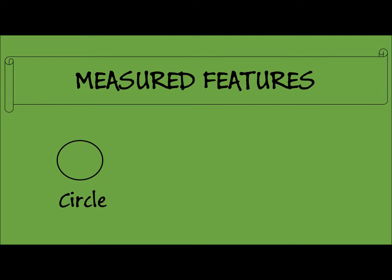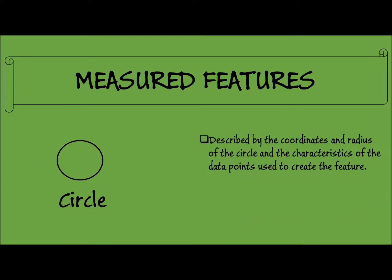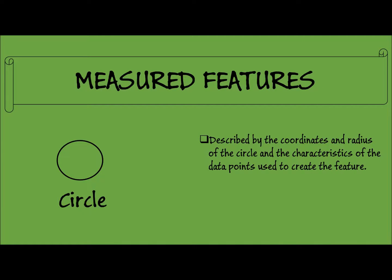Third is the circle feature. A circle is described by the coordinates and radius of the circle and the characteristics of the data points used to create the circle feature.